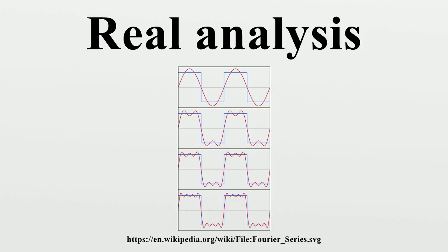Continuity: A function from the set of real numbers to the real numbers can be represented by a graph in the Cartesian plane. Such a function is continuous if, roughly speaking, the graph is a single unbroken curve with no holes or jumps. There are several ways to make this intuition mathematically rigorous. These definitions are equivalent to one another, so the most convenient definition can be used to determine whether a given function is continuous or not.